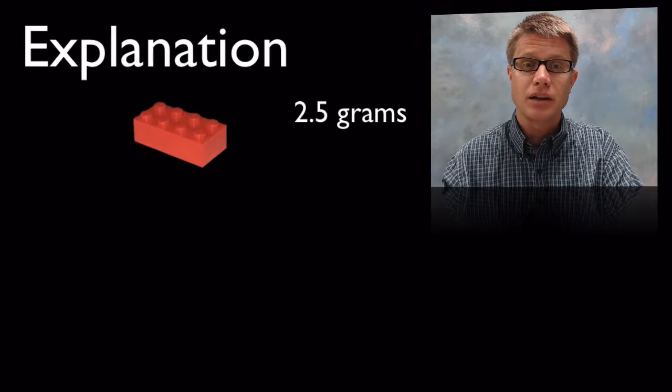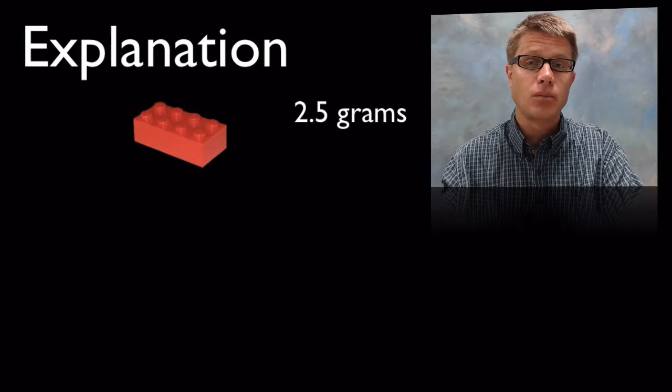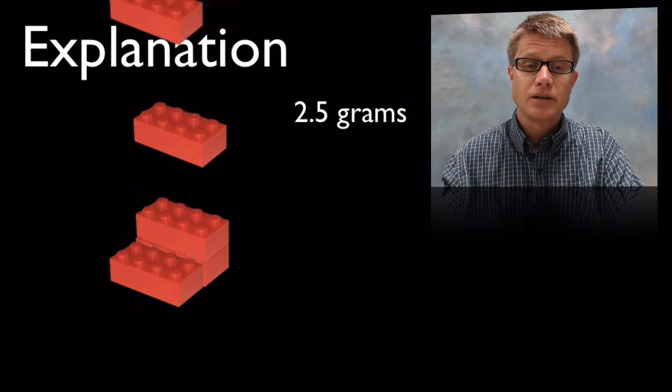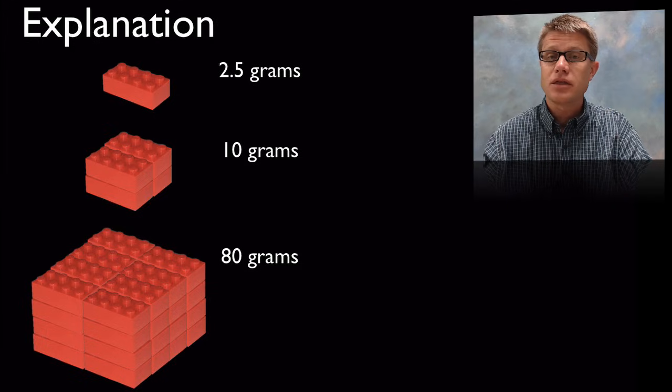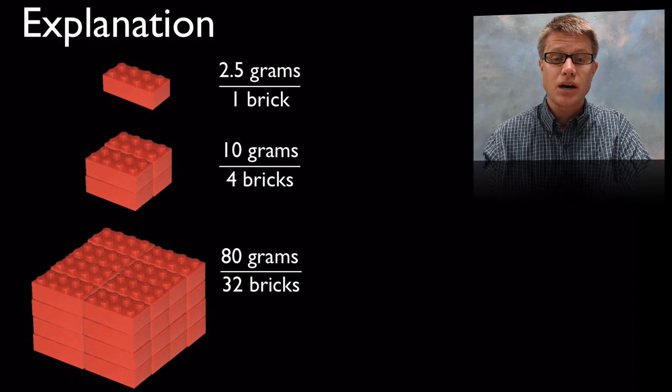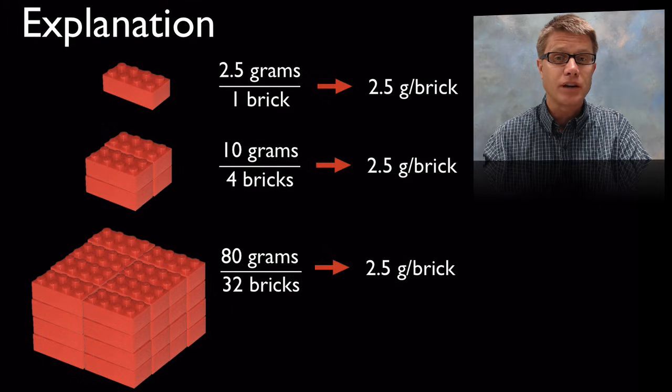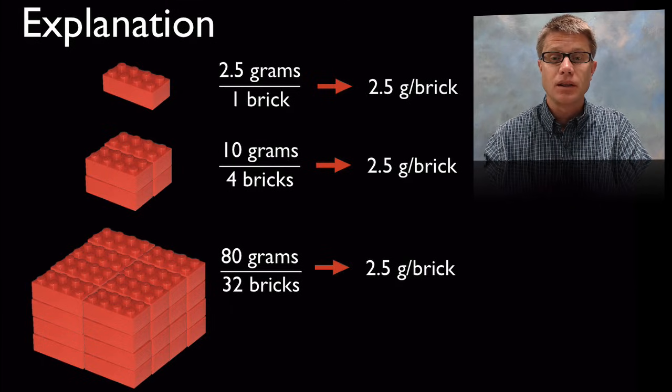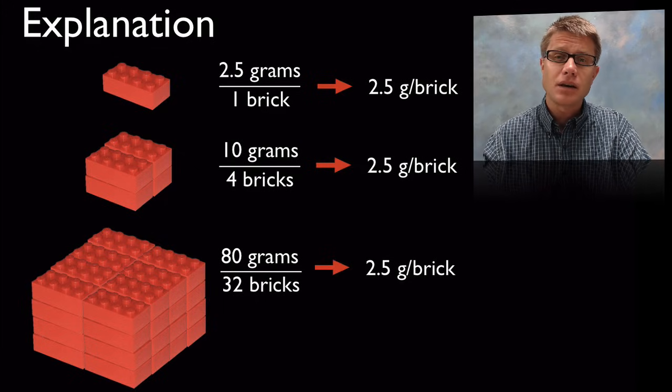And so let me kind of explain that. Let me use an analogy. Imagine I'm building something out of Legos. I'm using that standard 2 by 4 Lego brick. Well that weighs about 2.5 grams. One of those Lego bricks. And so let's say I built something that was made up of 4 of them. It's going to weigh 10 grams. Or let's say I built something that had 32 of them. It's going to be 80 grams. But if we were to look at the average mass of those objects we're going to get around 2.5 grams per brick. So it doesn't matter how large or small the sample is. If I had a big structure that was the size of this room made out of these red Lego bricks, it's going to still have the same average mass.